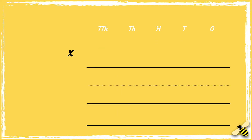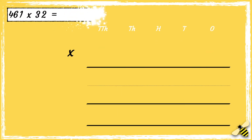Let's have a look at one more example: 461 multiplied by 32. 461 has 4 hundreds, 6 tens, and 1 one. 32 has 3 tens and 2 ones. So now that we're set up, we're ready to multiply.